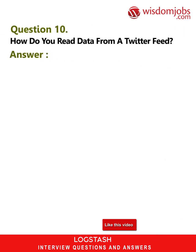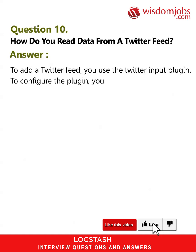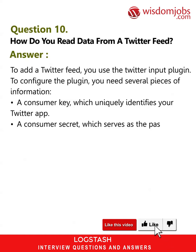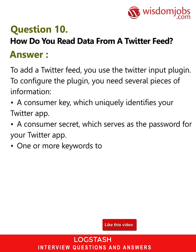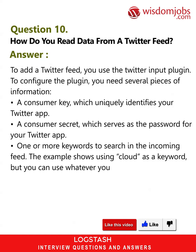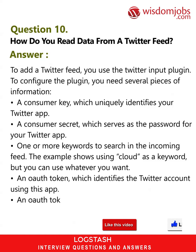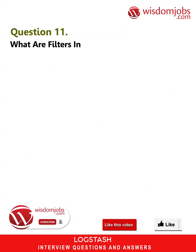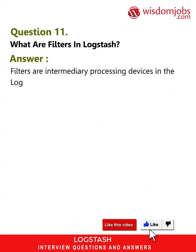Question 10: How do you read data from a Twitter feed? Answer: To add a Twitter feed, you use the Twitter input plugin. To configure the plugin you need several pieces of information: a consumer key which uniquely identifies your Twitter app, a consumer secret which serves as the password for your Twitter app, one or more keywords to search in the incoming feed, an OAuth token which identifies the Twitter account using this app, and an OAuth token secret which serves as the password of the Twitter account.